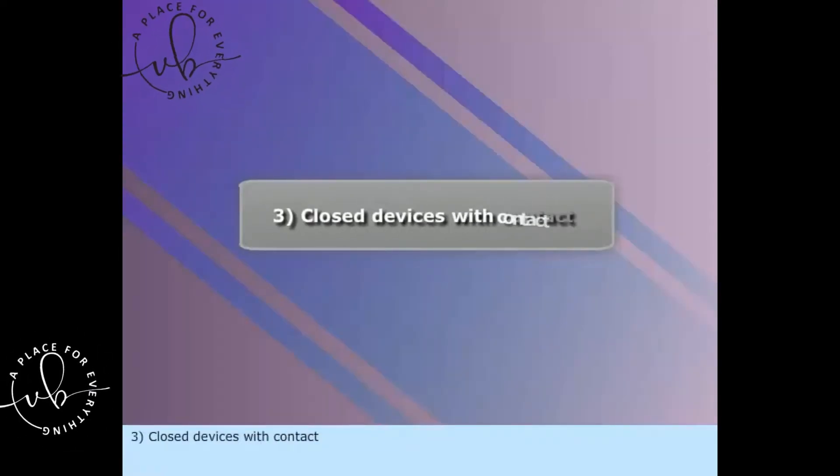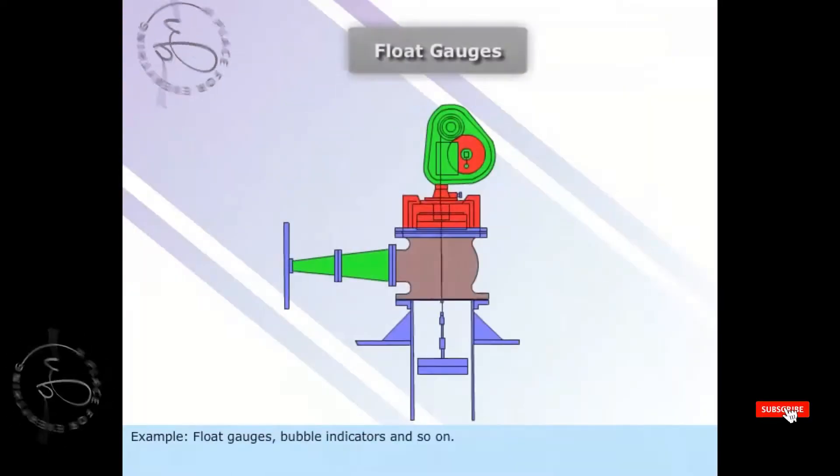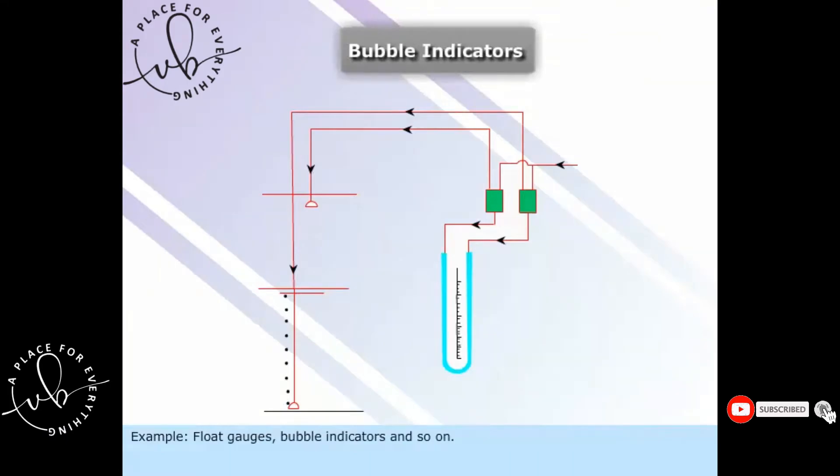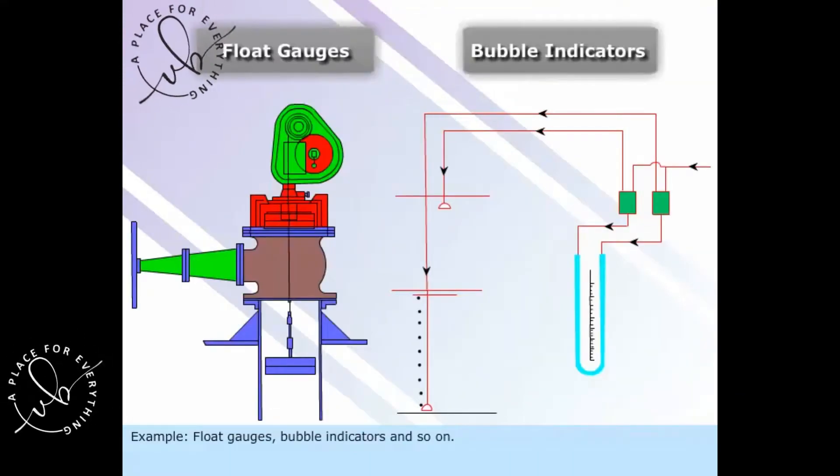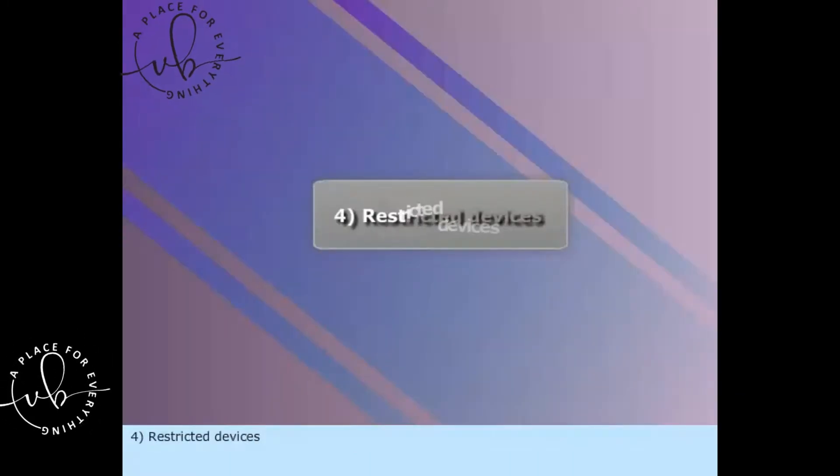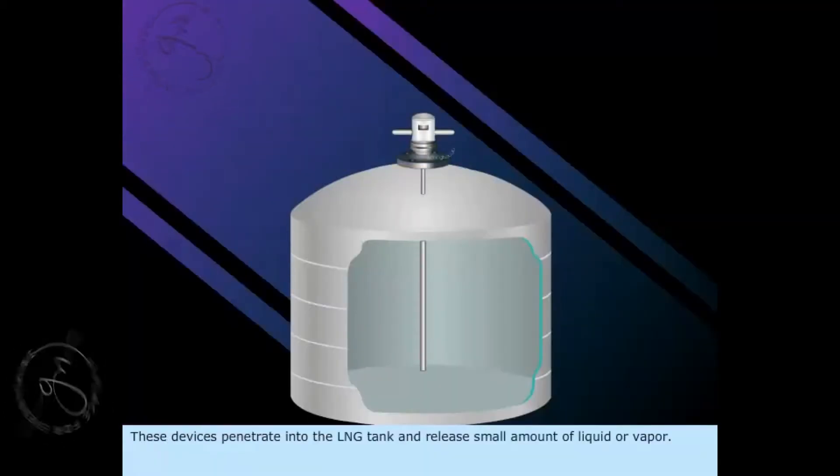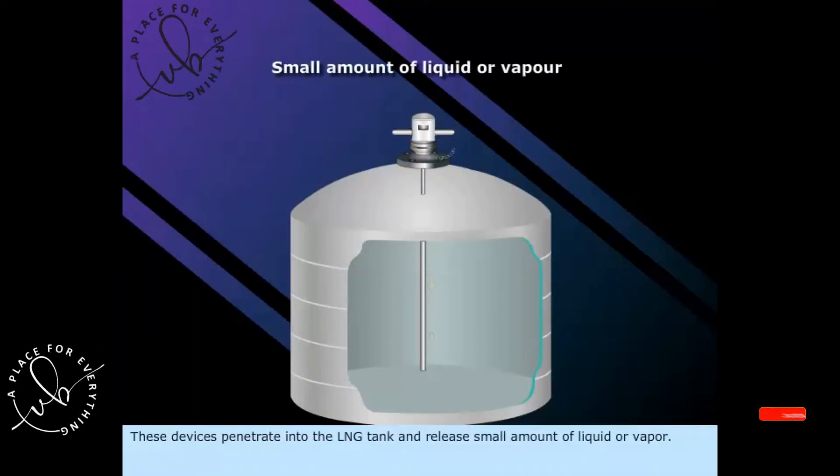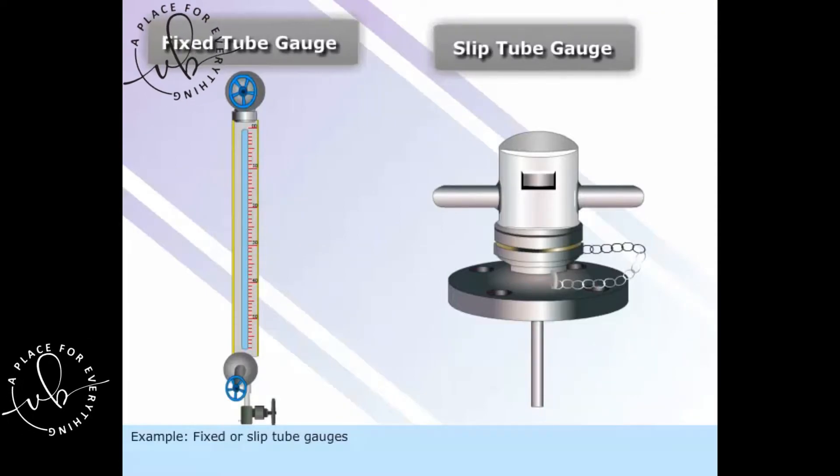3. Closed devices with contact - Float gauges, bubble indicators, and so on. 4. Restricted devices - These devices penetrate into the LNG tank and release small amount of liquid or vapor. Fixed or slip tube gauges.